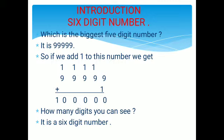How many digits can you see in this number? We can see 5 digits, isn't it? So students, if we add 1 to this number, let us see which number we get. After adding 1 to 99,999, you can see which number we have got. Can you tell me how many digits are there in this number? Yes, there are 6 digits in this number.